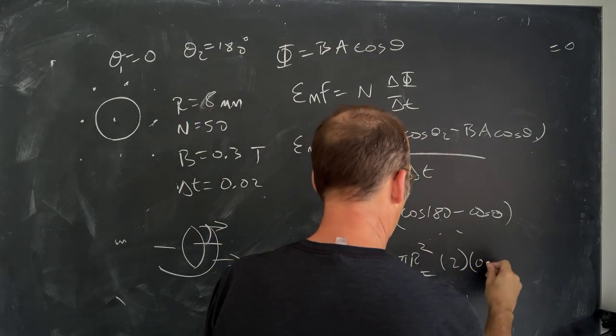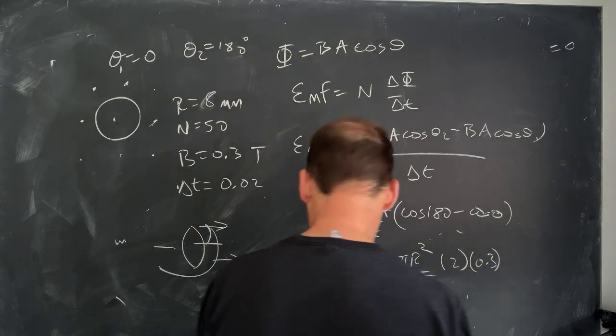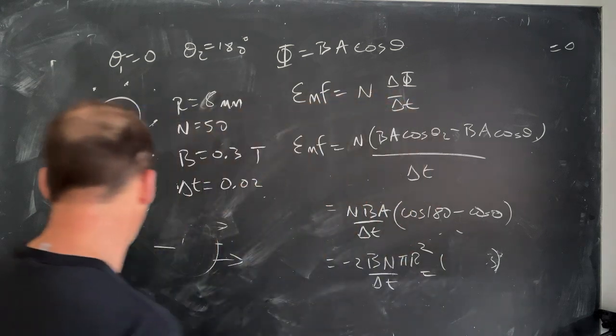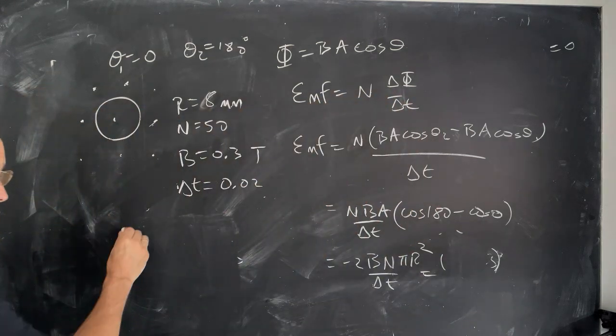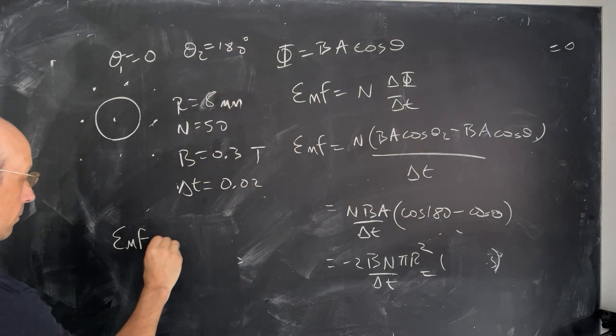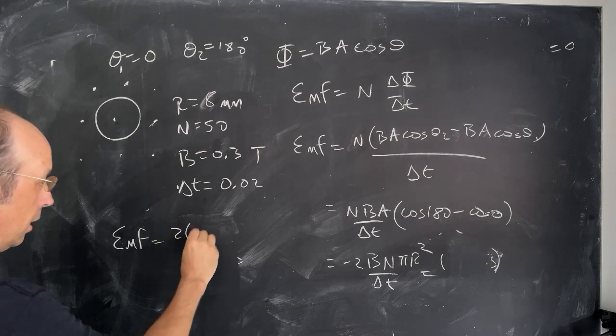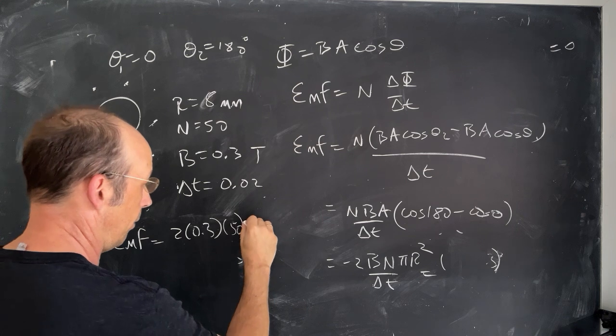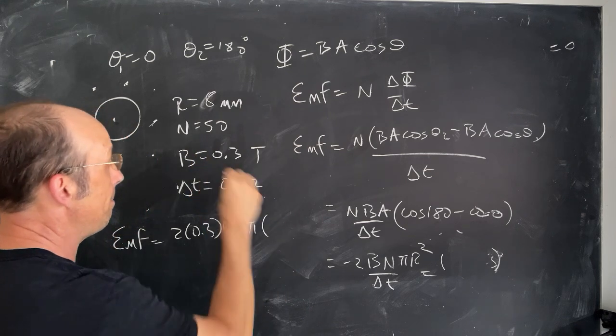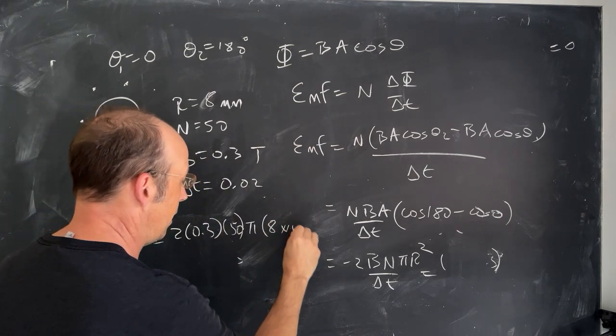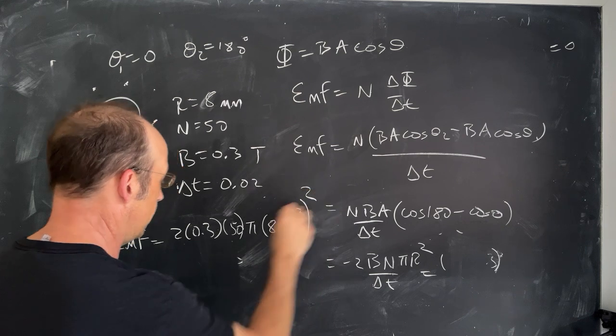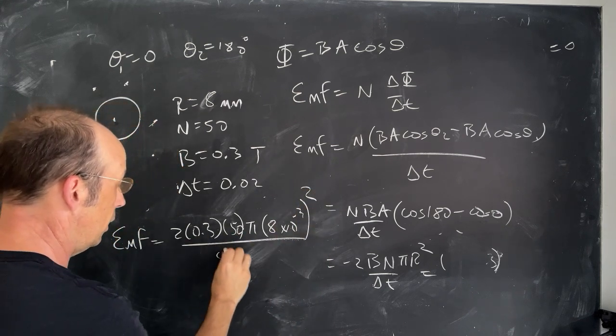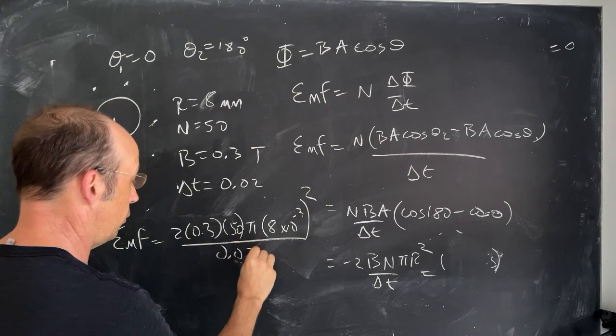2, 0.3. I'm going to run out of room right there. Let's put it over here. EMF is going to be 2 times 0.3 times 50, 50 times pi times 8 millimeters. So it's 8 times 10 to the negative 3. All that over 0.02 seconds.